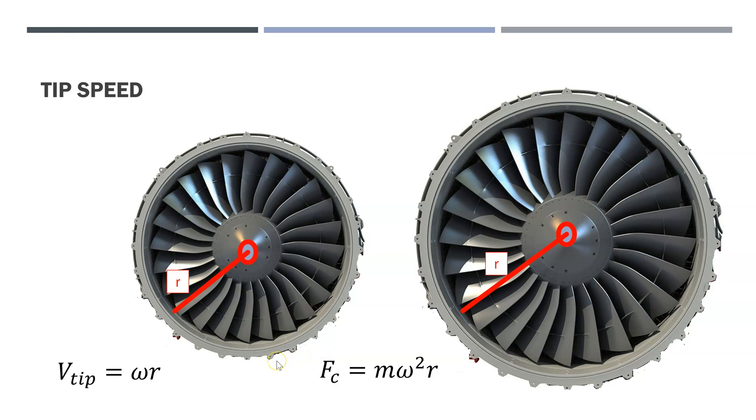And the other thing is they have included a gearbox in the engine to reduce the RPM to get rid of the tip speed.